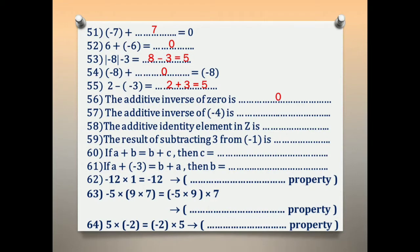Number 57: the additive inverse of negative 4. The additive inverse means change the sign — if positive write negative, if negative write positive. The additive inverse of negative 4 is 4.